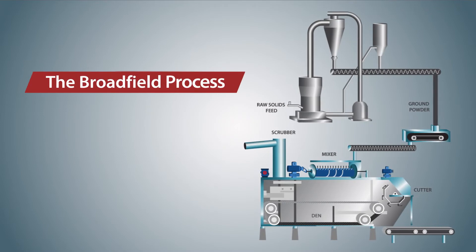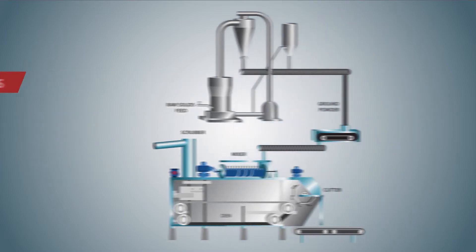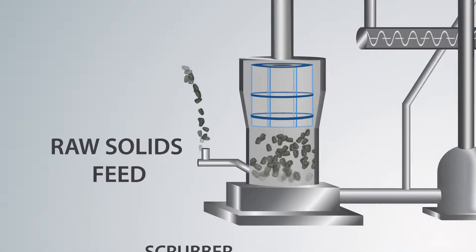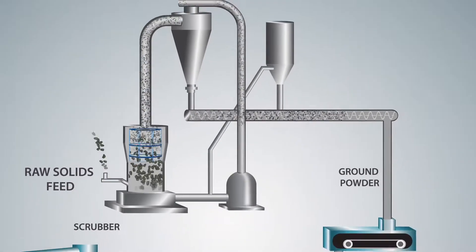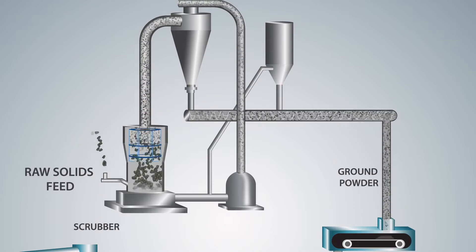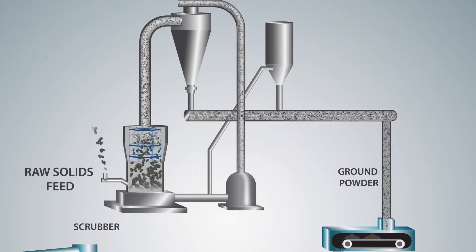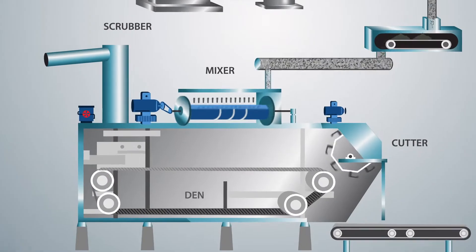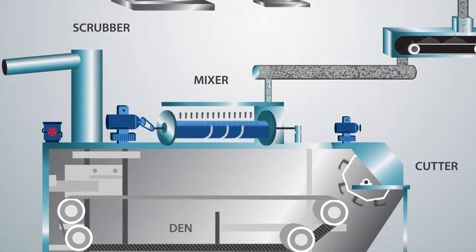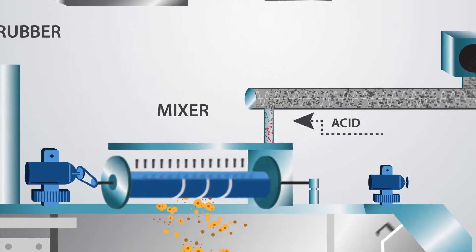The Broadfield Process controls automated feed rate and ingredient management to ensure reliability and consistency. In the first step, mineral rock is ground to desired fineness in a Bradley air-swept mill system. It is then conveyed to a specialized mixer where it is combined with acid to create a chemical reaction.